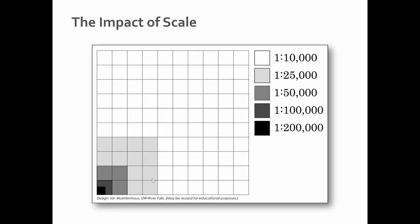Here you can see you'd only have this light gray area. At 1 to 50,000, another exponential decrease, and then all the way down to 1 to 200,000. So a map that you originally had at 1 to 10,000, if it was reduced to 1 to 200,000, you'd have to fit everything on your map from that area into this tiny area. And it necessitates cartographic generalization.